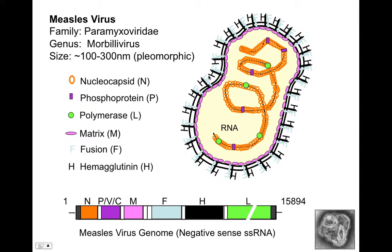The H and F proteins: H refers to hemagglutinin, which attaches to the target cell type and can bind to SLAM or Nectin-4. The fusion protein triggers the envelope to fuse with the target cell. The genome is negative-stranded RNA, which gets converted to positive strands to be transcribed. RNA polymerase starts at the front and falls off between each gene, so there's far more N made than L, because you only need enough L to replicate, whereas you need many more N proteins to cover the entire genome.